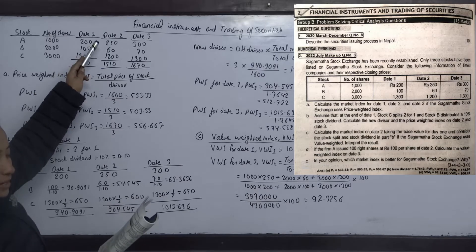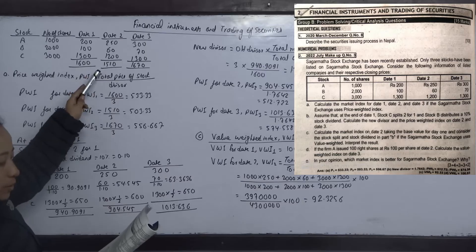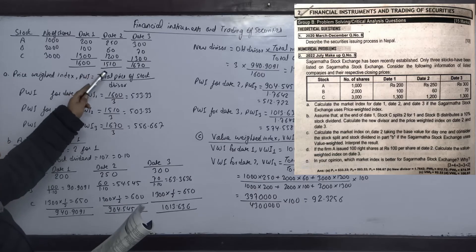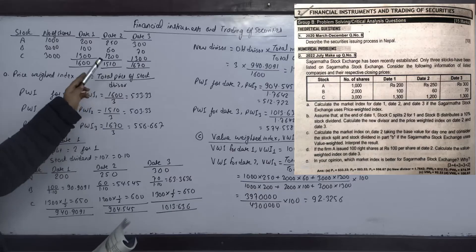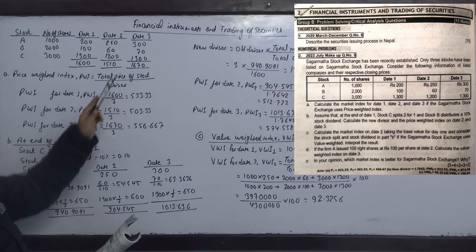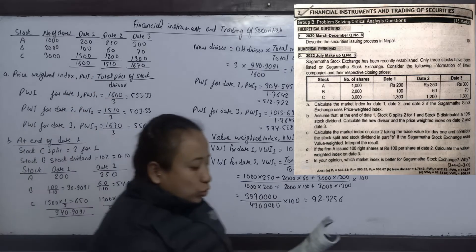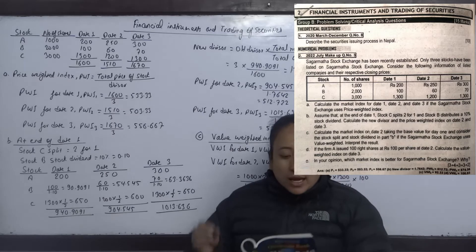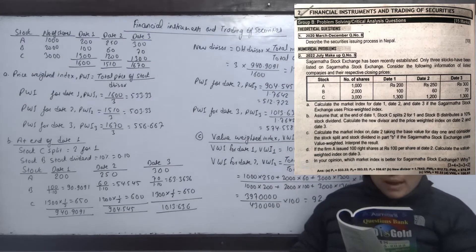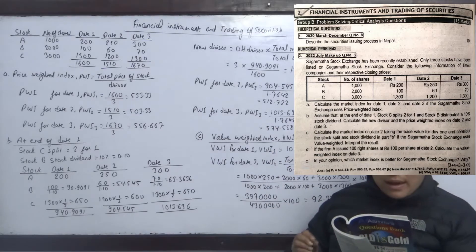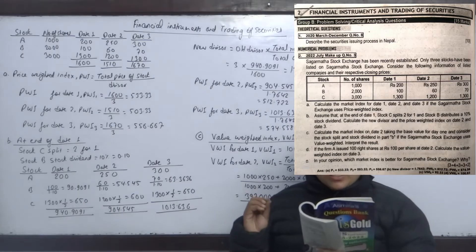Date 2 prices are $250, $60, and $1,200. Date 3 prices are $300, $70, and $1,300. The stock exchange includes a total of 1,670. Calculate the market index for Date 1, Date 2, and Date 3.